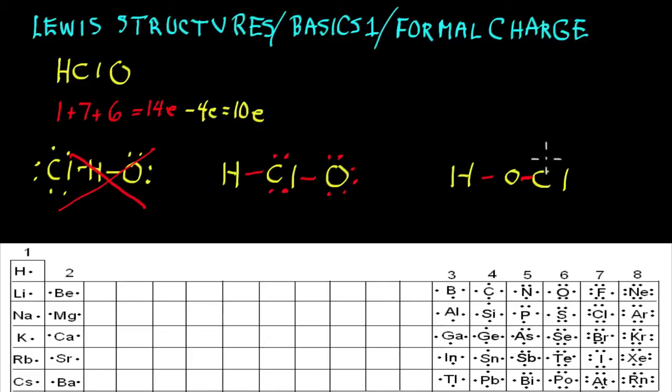We could do the same thing over here. We have 2, 4, 6, 8, 10. And we have octets here. So which one of these structures is correct?